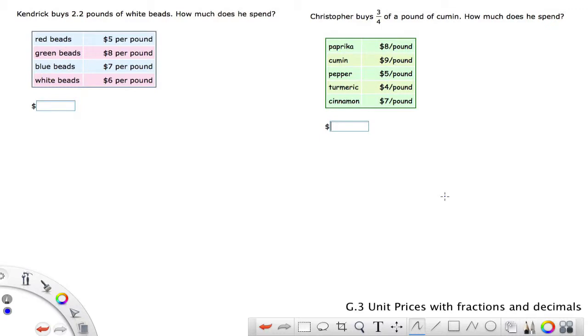We are now working in grade 6. This is G.3 unit prices with fractions and decimals. We've got a couple of examples here we're going to run through. Now they give us the unit price and say we're buying this much of that stuff. So this is straight up multiplication. We're going to run through this pretty quickly.